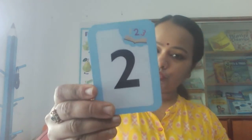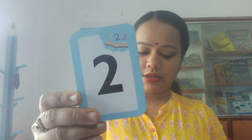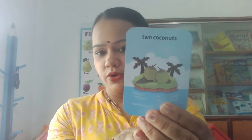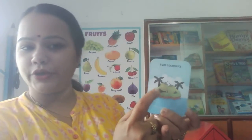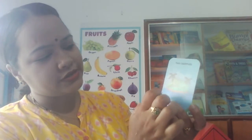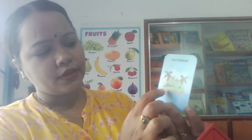Number 2. See, the number is 2. Now count how many coconuts are there. 1, 2. There are 2 coconuts and 2 coconut trees. 1, 2. So the number is 2.